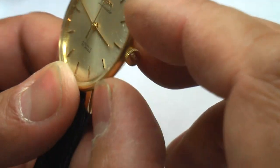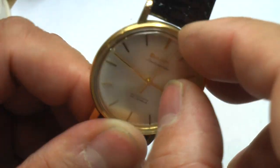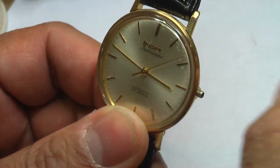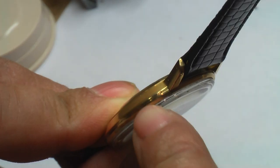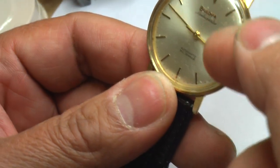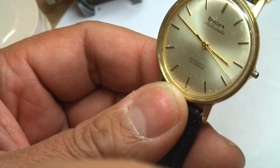To remove this movement, you have to pull out the stem apart, remove the round bezel here, snap it out, remove the crystal. And then the whole movement and dial will come out from the front.